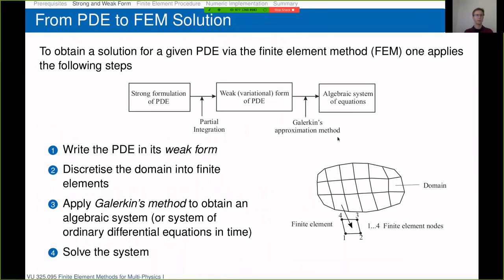To go from the partial differential equation to the finite element solution, we need to take several steps. First, we write the PDE in the weak or variational form. Then we discretize the domain into finite elements. Next, we apply Galerkin's method to obtain an algebraic system or a system of ordinary differential equations in time. Finally, we solve this system numerically. We will go through these steps on an example PDE.